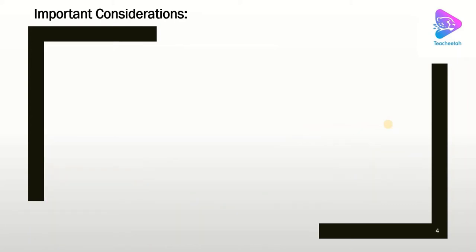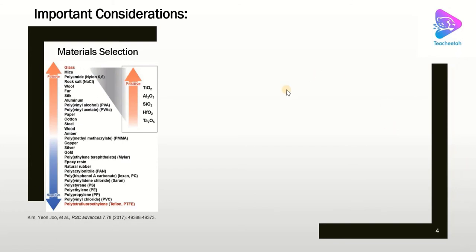Before we continue to the model, I need to give you some important considerations. The first is that material selection is very important for TNG design. The materials should be very different in terms of their tribopolarity — one material should have very negative tribopolarity and the other very positive tribopolarity, so that when they contact each other a large amount of charge is generated. In the design of TNGs, materials are selected from the bottom and top of the triboelectric series.